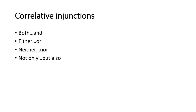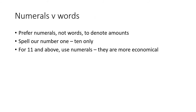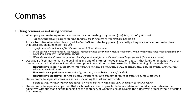Correlative conjunctions include: both/and, either/or, neither/nor, not only/but also. Regarding numerals versus words: from one to ten, you need to write those numbers as words. From eleven onwards, you can write the numbers as numerals — so you can write 22, 25, or 155 million. For commas: when you join two independent clauses with coordinating conjunctions like 'and,' 'but,' 'or,' 'yet,' or 'so,' then you put a comma.